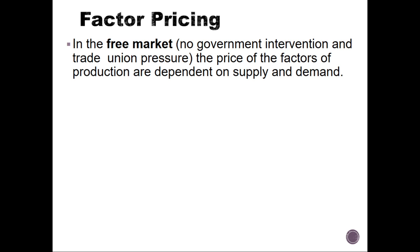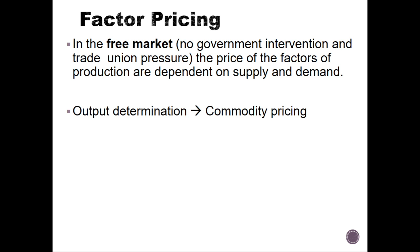Looking at factor pricing: in the free market — which is the market with no government intervention or trade union pressure — the price of the factors of production is dependent on supply and demand. For example, wages will only depend on the demand for employees. This leads to output determination, which is commodity pricing, and income distribution, which is factor pricing.